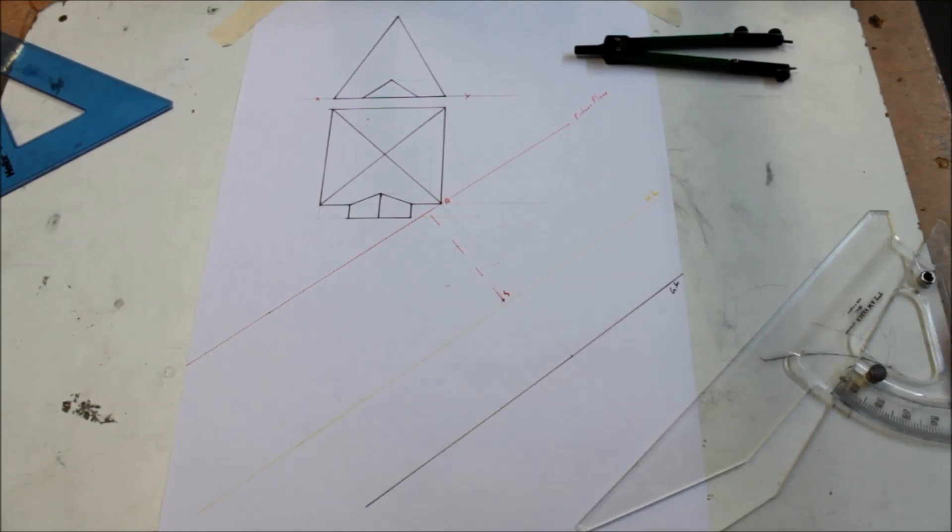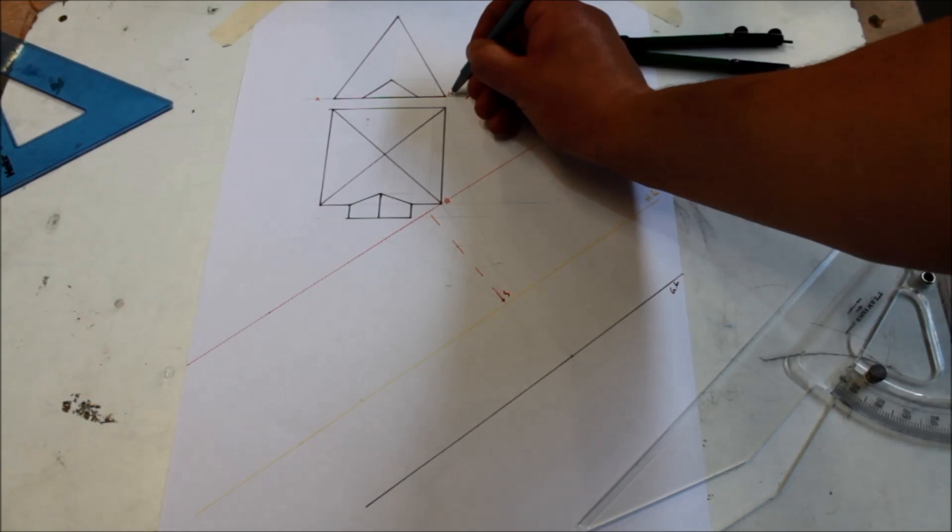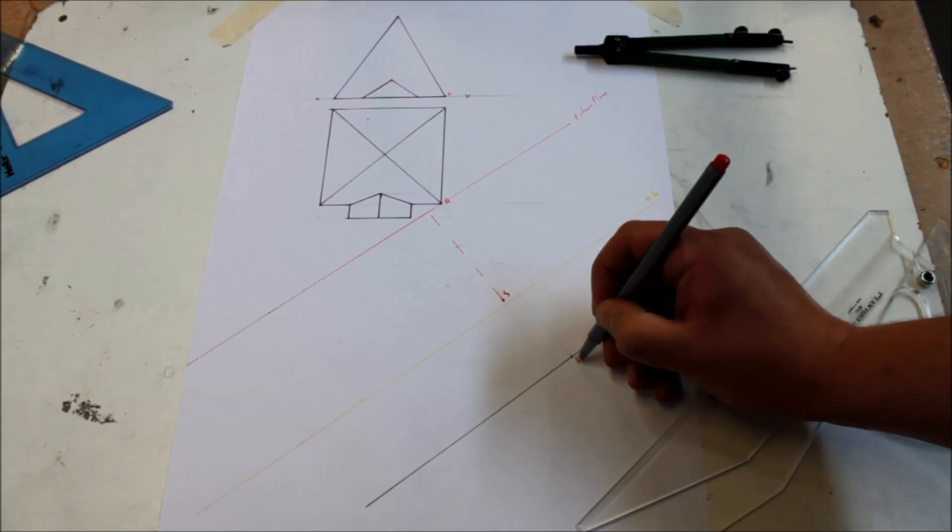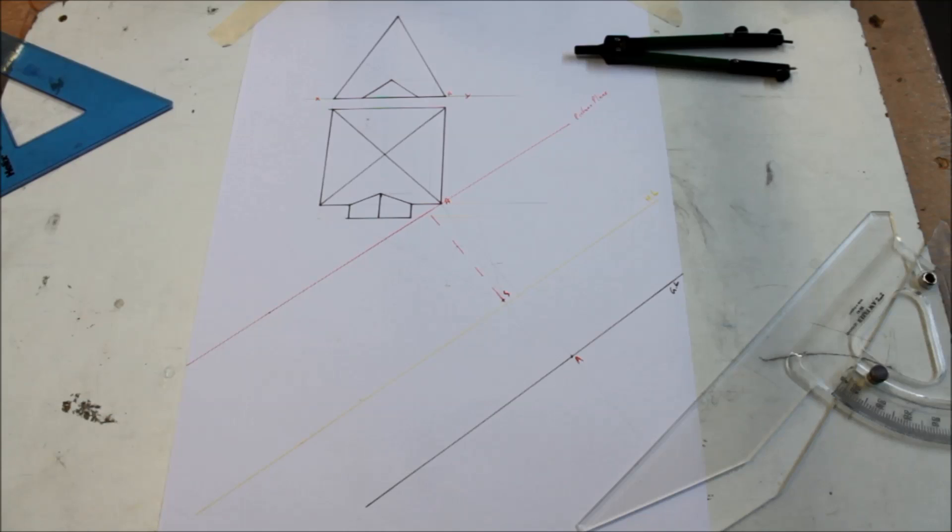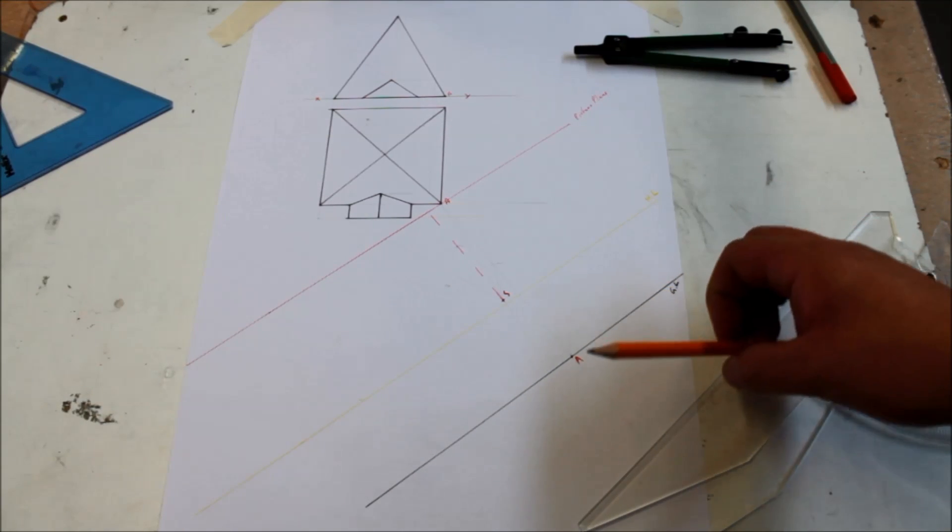So first thing is first, A is on the picture plane, it's also on the ground. You see here in the elevation, so this is point A. So before we can go projecting our perspective drawing, we need to put in our vanishing points.